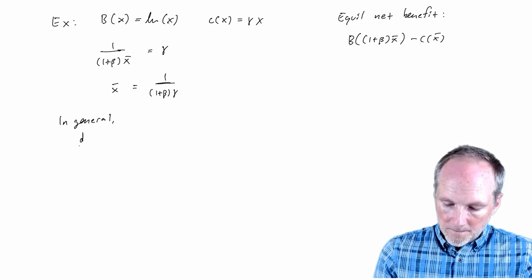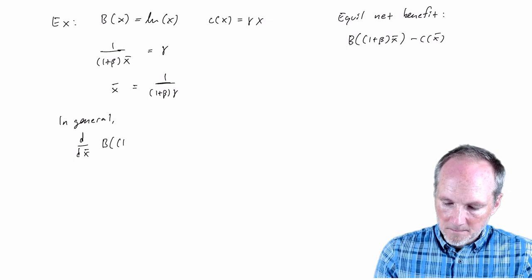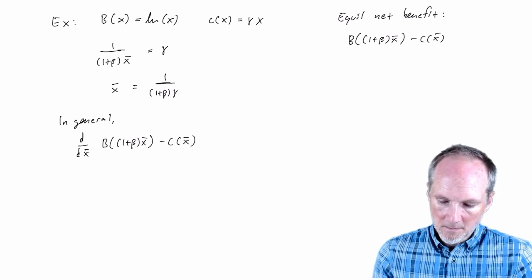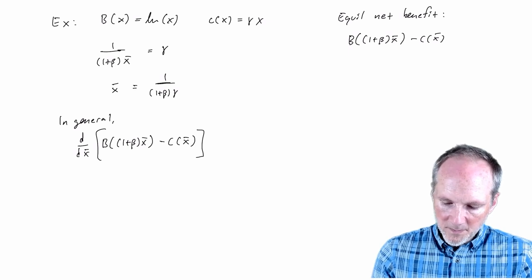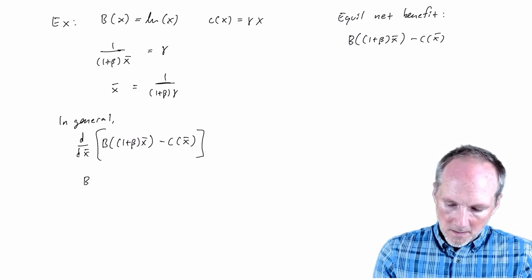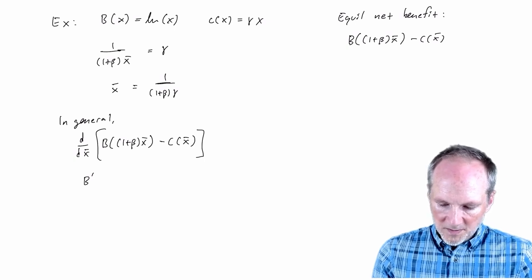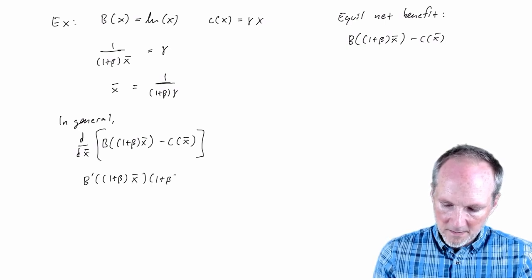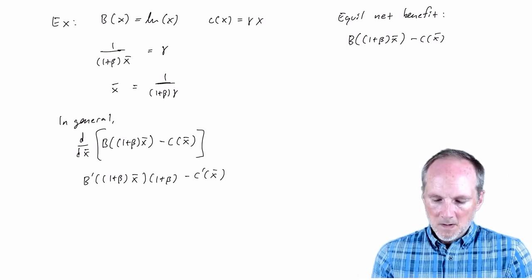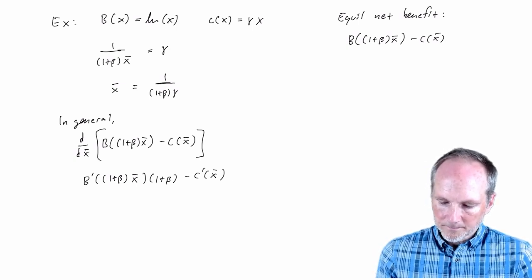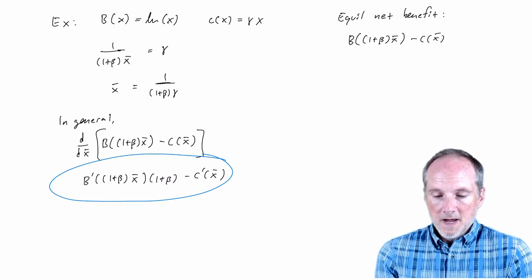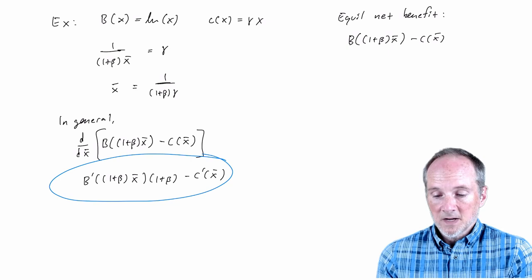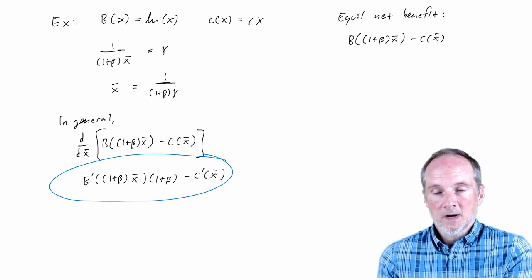So we're going to differentiate this with respect to X bar, the whole thing. Well, that's going to be marginal benefit times one plus beta minus C prime X bar. And right, so this expression here, that's going to tell us how the net benefits of these two decision makers change as they both increase their activity level.